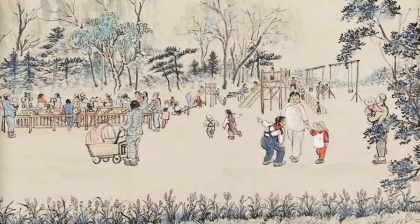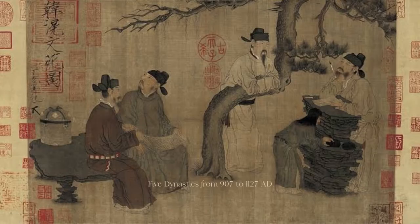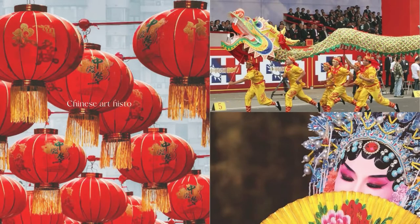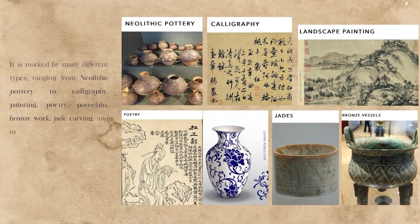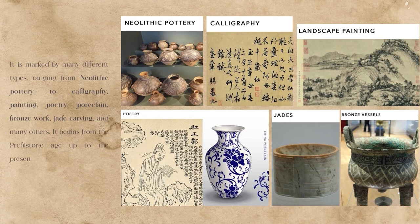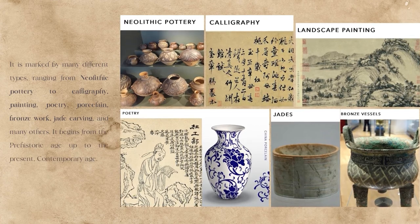Often these paintings were produced to decorate the inside of human burial sites. Landscape painting, usually regarded as the highest form of Chinese painting, rose to prominence during the Five Dynasties period, from 907 to 1127 AD. Chinese art history encompasses all the visual art originating in China and produced by Chinese cultures and artists. It is marked by many different types, ranging from Neolithic pottery to calligraphy, painting, poetry, porcelain, bronze work.